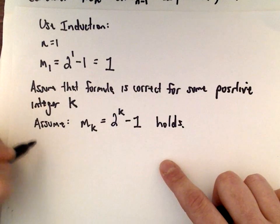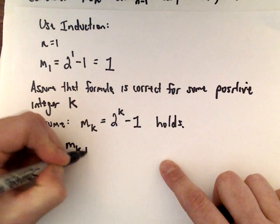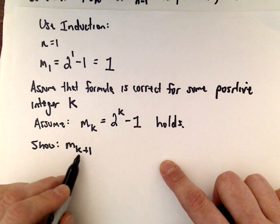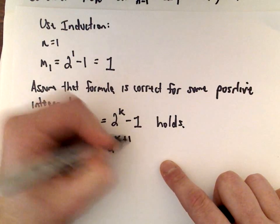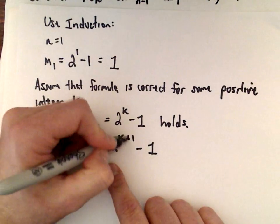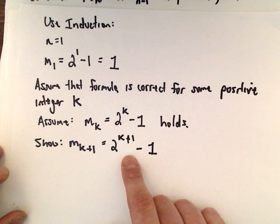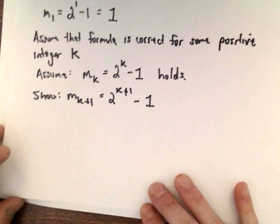Now what we have to do is show that the next step also holds: m sub k plus 1 should equal 2 to the k plus 1 minus 1. This is what we have to justify. If we can justify this induction step, we're finished and we will have shown that our formula is correct.